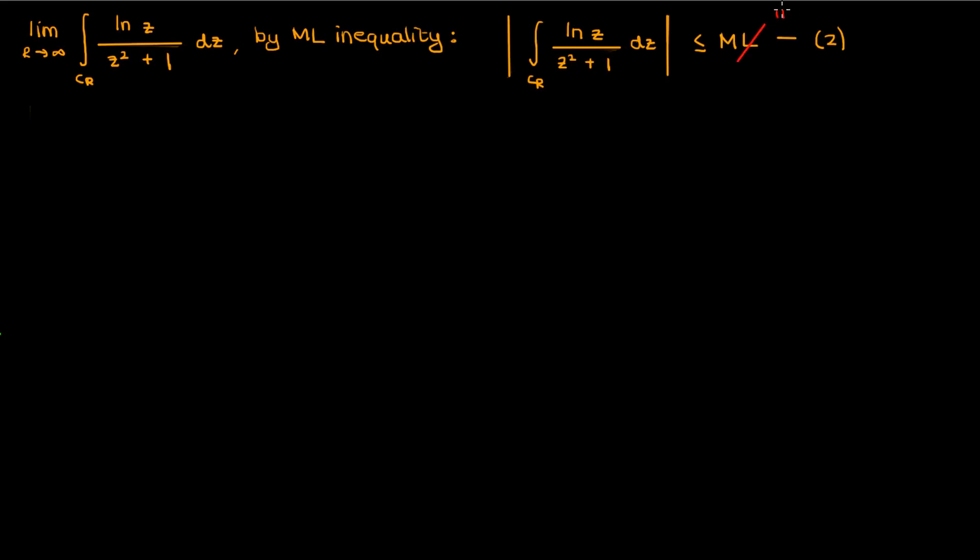The length of the contour L is just pi R because it's a semicircular contour. 2 pi R is the circumference of the full circle, therefore pi R is the circumference of the semicircle. But what about the maximum value M? That's the real question. Well the modulus of the whole integral is just the integral of the modulus, which I can then split up into separate moduli of the numerator and denominator. So how do I find the maximum possible value of the function that's being integrated here?